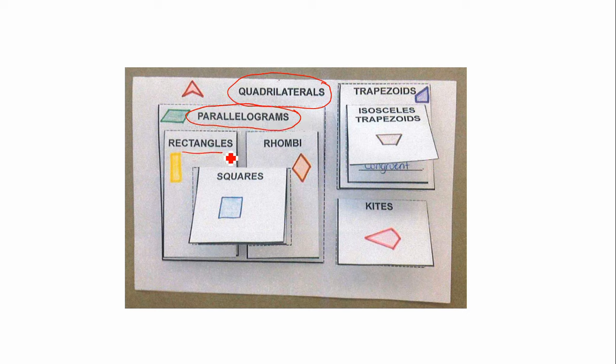And now notice rectangle, rhombi, and squares here, they're a part of that parallelogram family as well as the quadrilateral family. So these three figures are special types of parallelograms. They are parallelograms, but they're just a little bit more special. So they have some key features that set them apart from other parallelograms, and we're going to take a look at filling in those key features inside of those little flaps today.